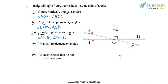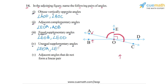In part four, we have to find unequal supplementary angles. For example, angle EOA and angle EOC add up to 180 degrees because they form a linear pair, so their sum is 180 and they are supplementary. Clearly these two angles are unequal, so angle EOA and angle EOC form a pair of unequal supplementary angles.